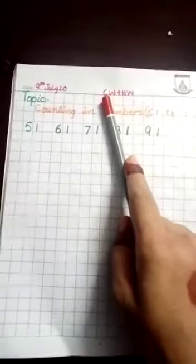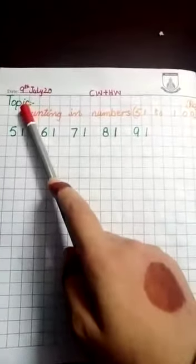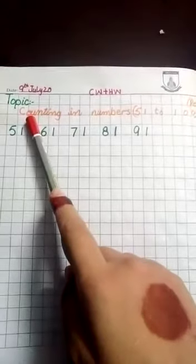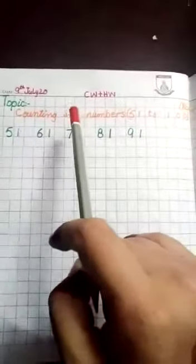Okay, now start today's work. First of all we will write the CW plus HW top of the page, date at the left corner 9th July 2020. Topic is the first line and caption is the second line. Read the caption carefully: counting in numbers 51 to 100.